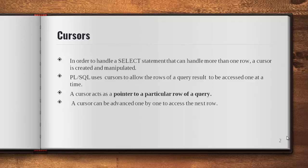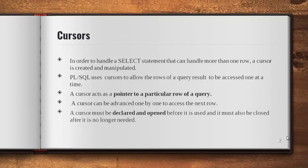A cursor can be advanced one by one to access the next row, so the cursor has to be incremented one by one — we can't retrieve all the records at a time. When the cursor points to one particular record it fetches that record and displays it as output, then advances to the next record. A cursor must be declared and opened before it is used, and when it is no longer needed you have to close it.